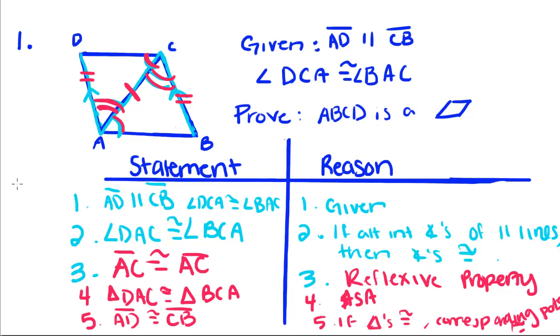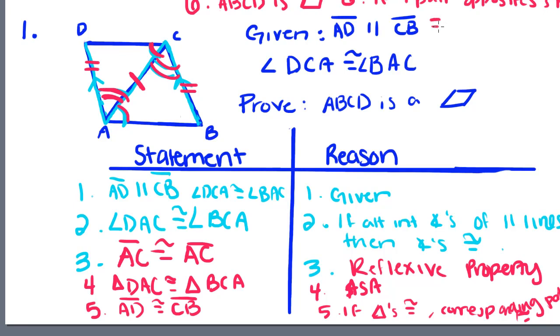And I ran out of space, but our last step, I'll write up here. So, for our very last step, we can say that ABCD is a parallelogram. And the reason for that is, if one pair of opposite sides are congruent and parallel, then it is a parallelogram.